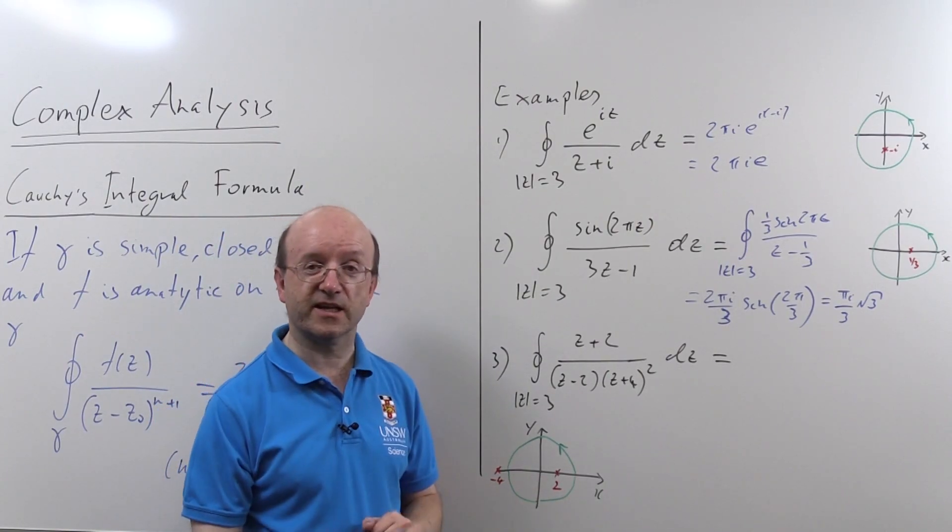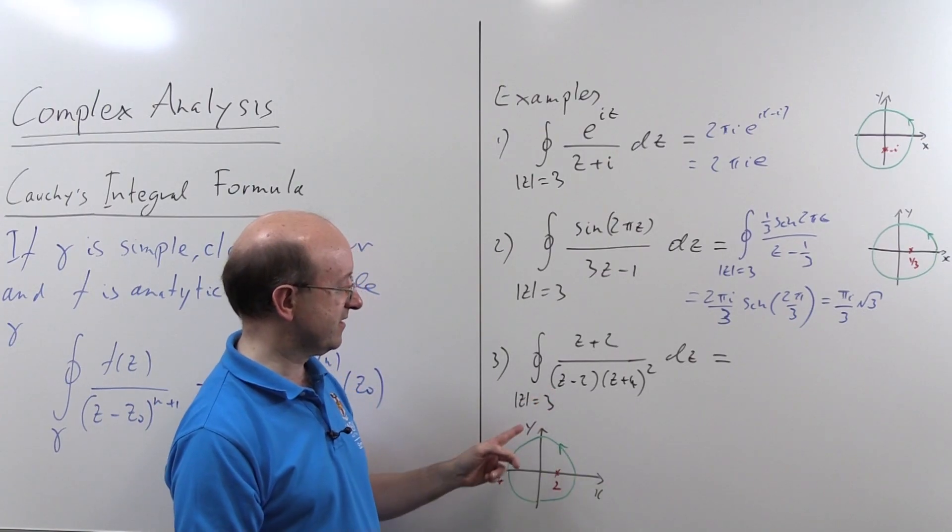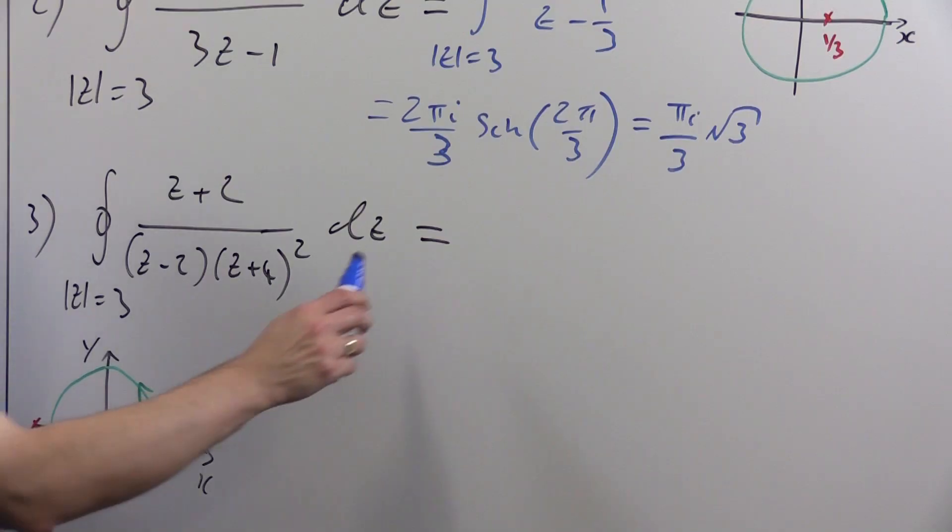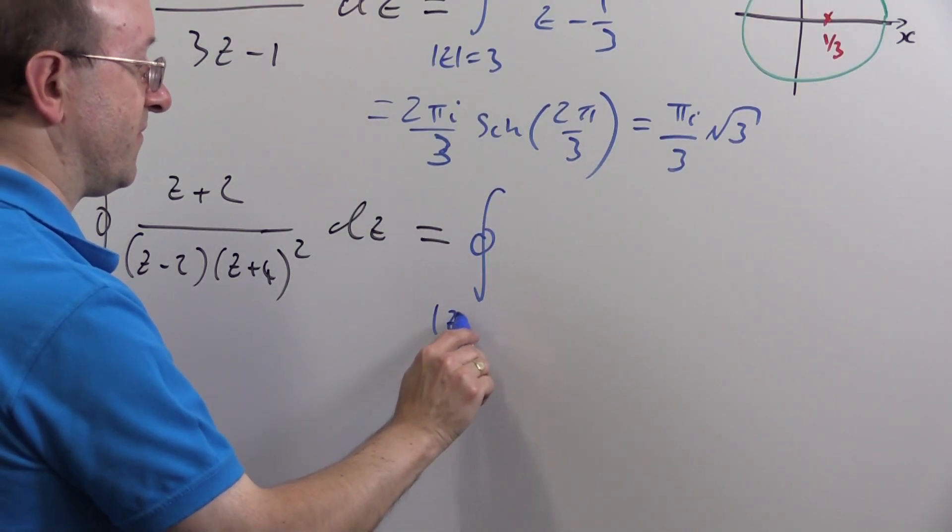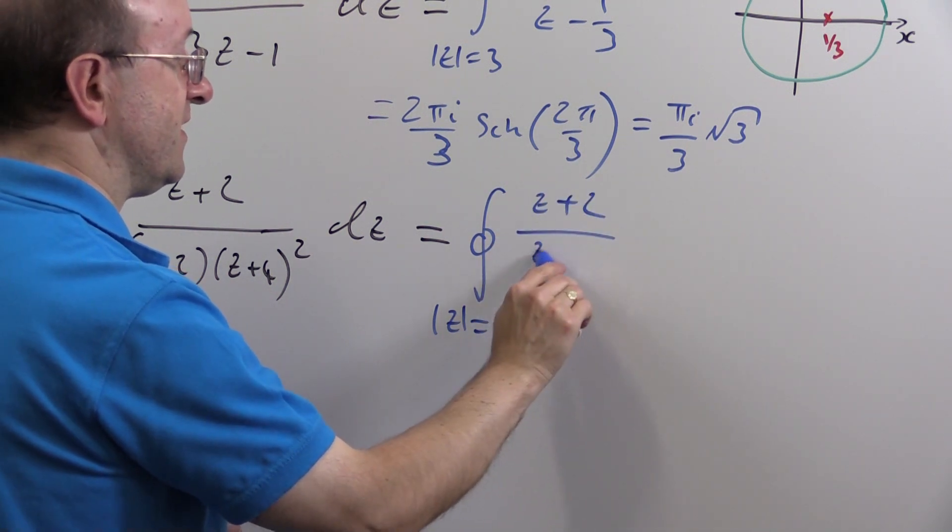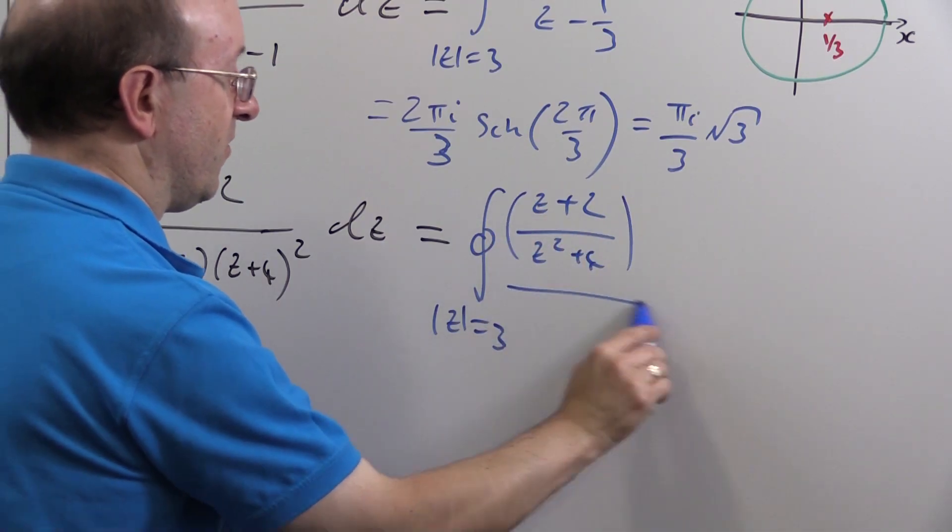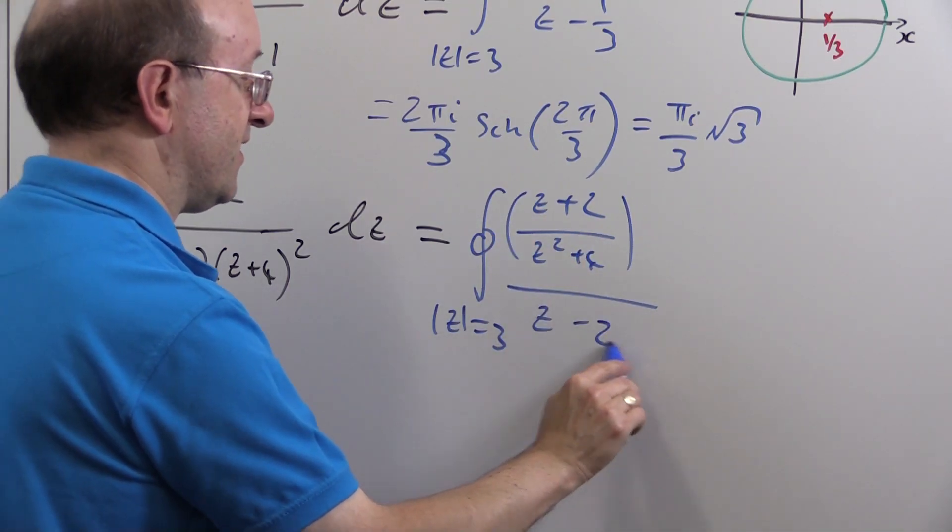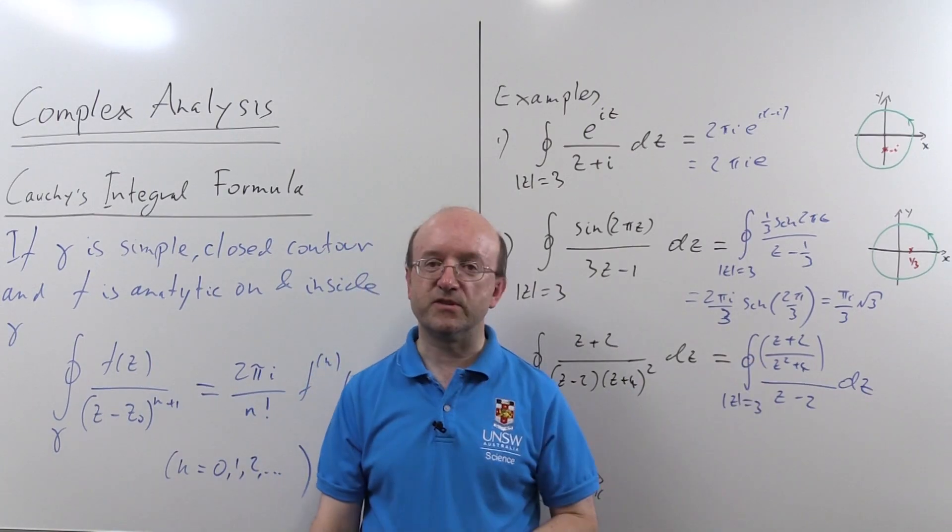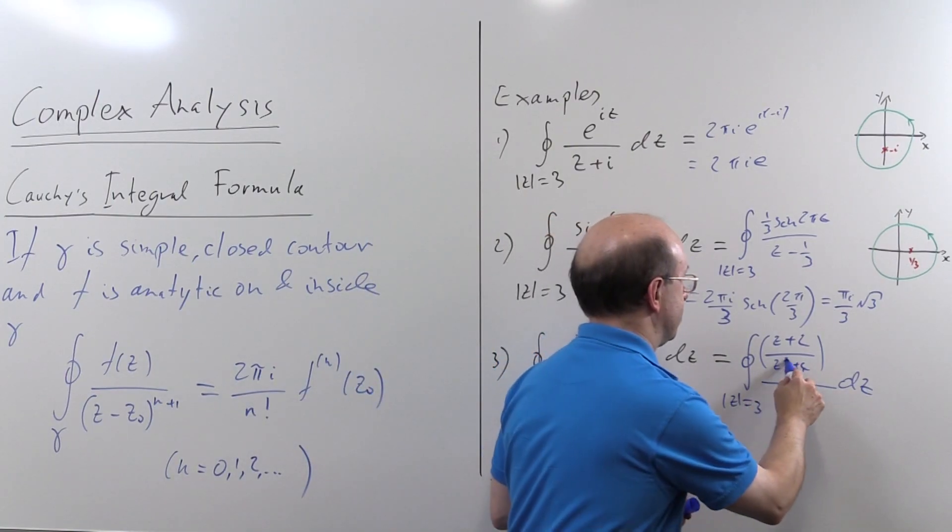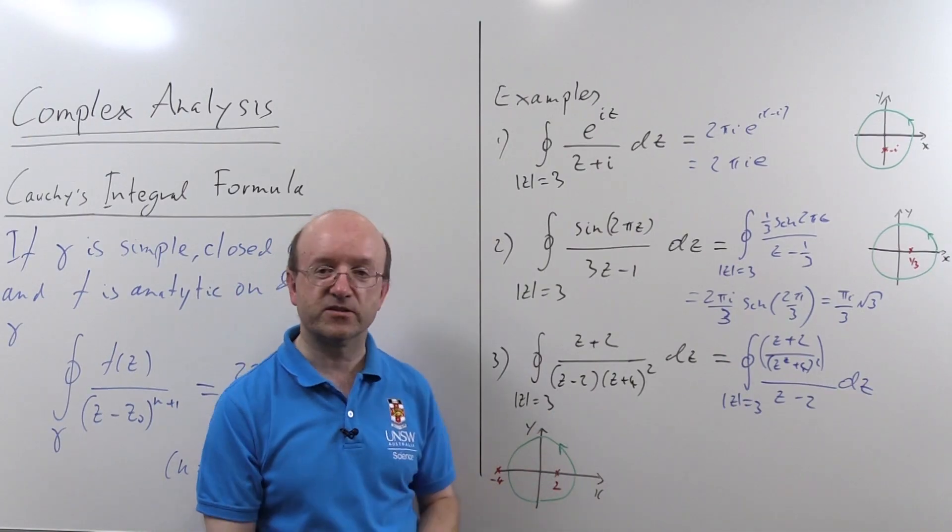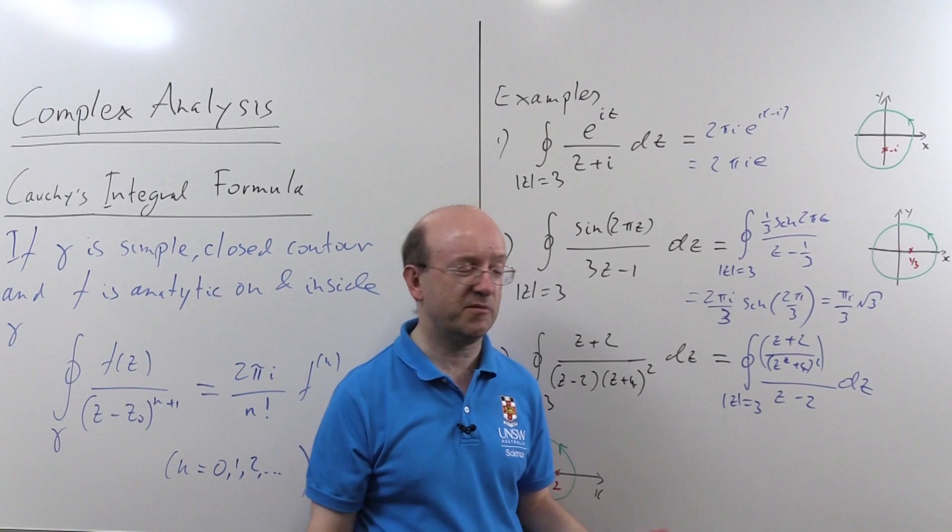The fact that minus 4 is a singularity isn't relevant because the function I'm going to look at, I want to be analytic on and inside gamma. So if we rewrite this appropriately as z plus 2 over z plus 4 squared all over z minus 2, then z plus 2 over z plus 4 squared is analytic on and inside gamma. It's not analytic outside, but that doesn't bother us.